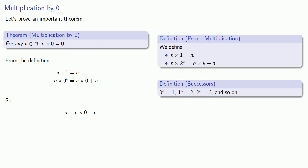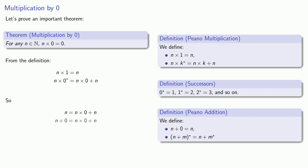Our definition of addition tells us that n and n plus 0 are the same thing. We went to a lot of trouble to prove commutativity, so n plus 0 is the same thing as 0 plus n. And we subtract n from both sides.